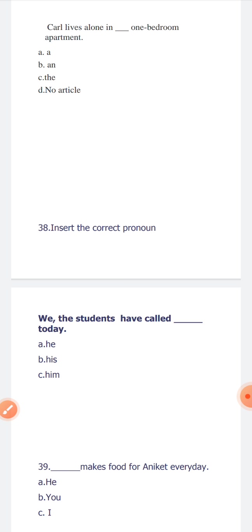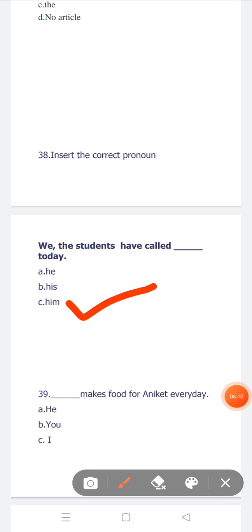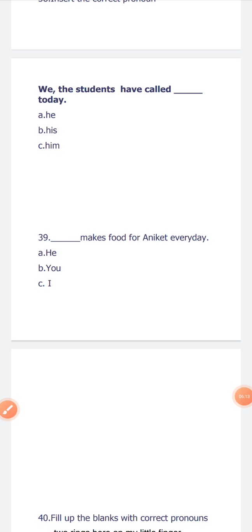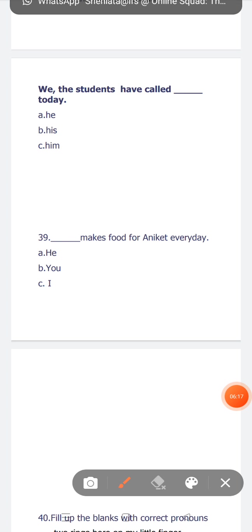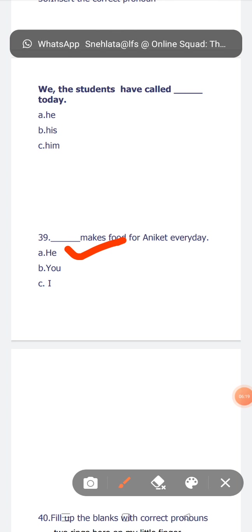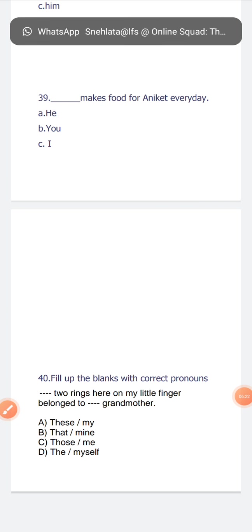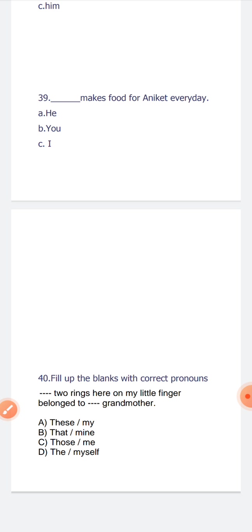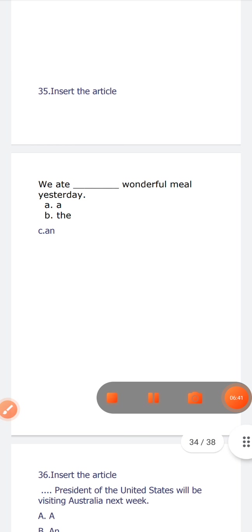Now next, insert the correct pronoun. We the students have called him today. Now next, he makes food for Aniket every day. He makes food for Aniket every day. Last one, fill up the blanks with correct pronouns. These two rings here on my little finger belong to my grandmother. So these are the correct answers. Got it children? Now I have told you the answers of objective part also.